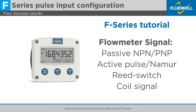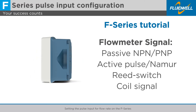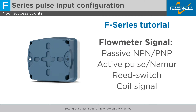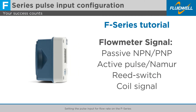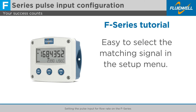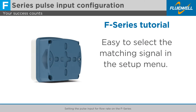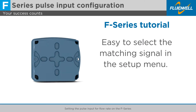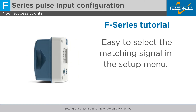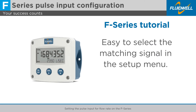A flow meter output signal can be connected with a passive NPN or PNP, an active pulse or NAMUR signal, a reed switch or coil signal. The signal type matching your flow meter can easily be selected in the setup menu without having to adjust any sensitive mechanical dip switches, jumpers or the need for adding external resistors for most applications.